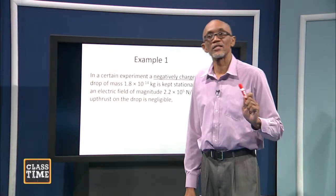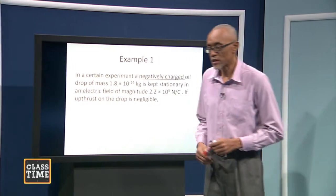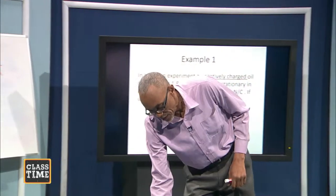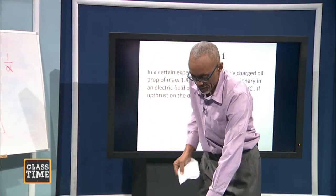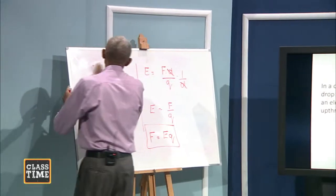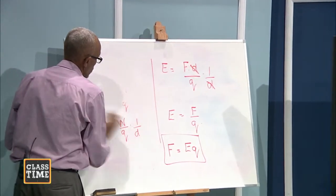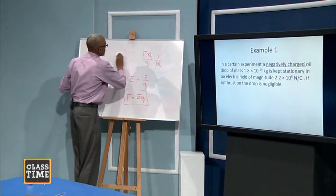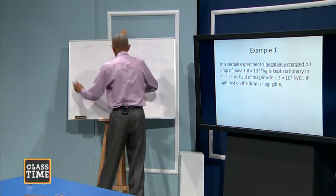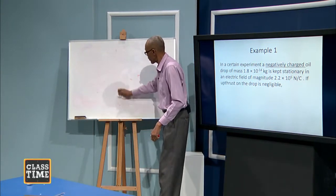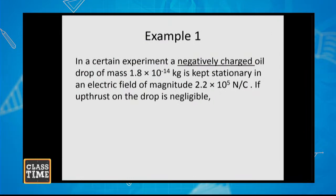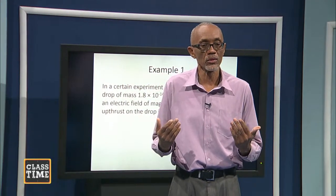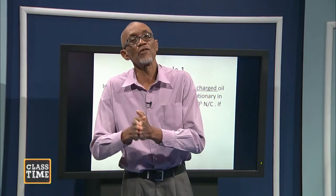Before we go into some examples, I want us to look at the units of electric field — the units of electric field strength. You will notice that sometimes I'm using the term 'electric field' and 'electric field strength' kind of interchangeably. In some texts, they use the word 'electric field' and drop the term 'strength,' saying the magnitude of the electric field — but really, what they're speaking to is the magnitude of the electric field strength.